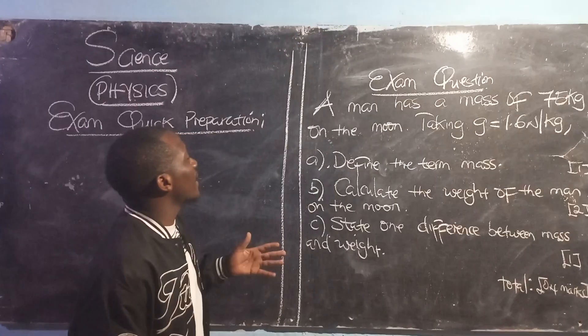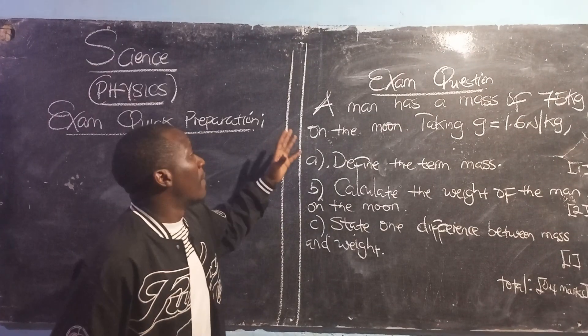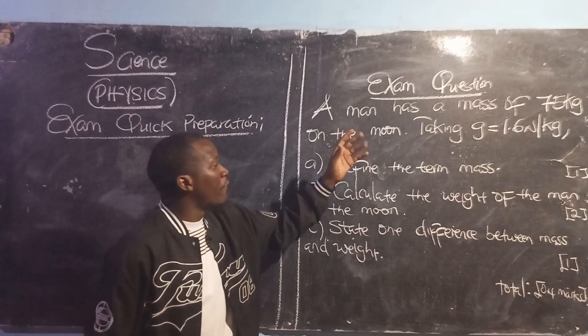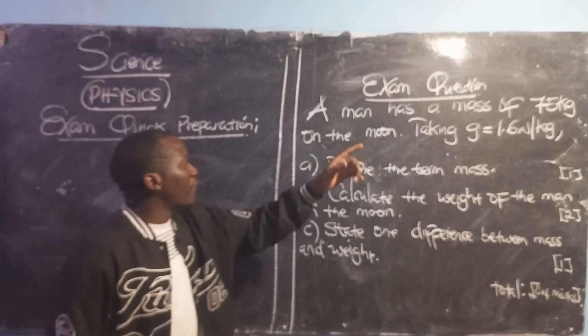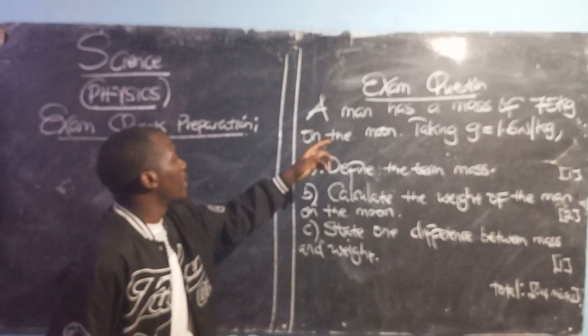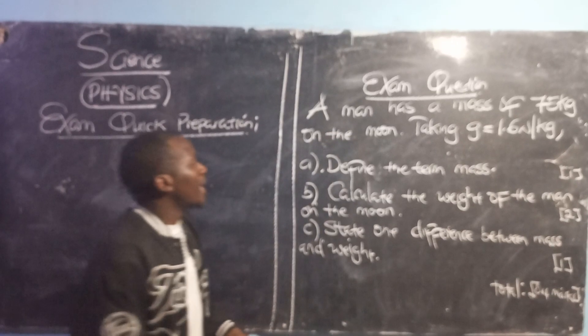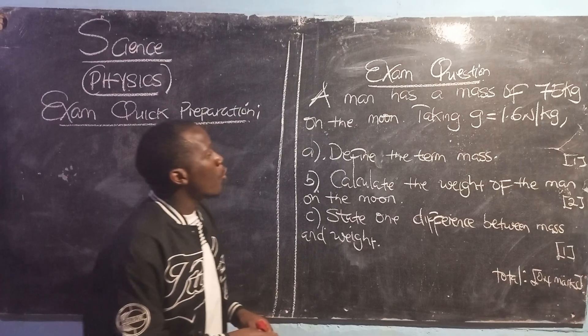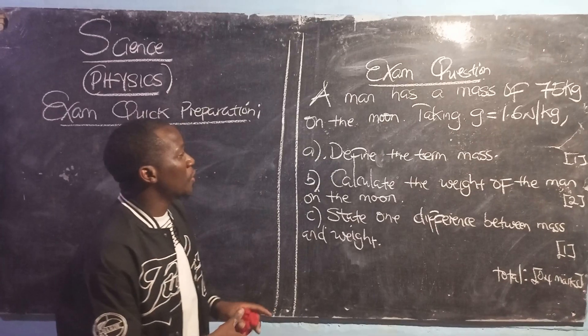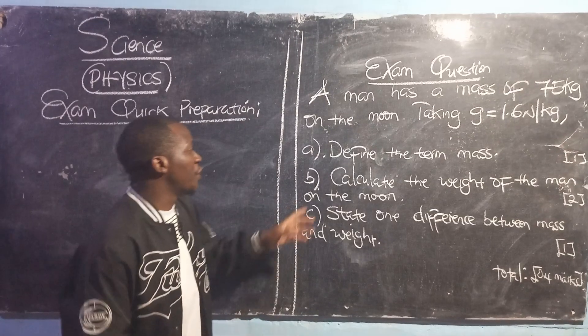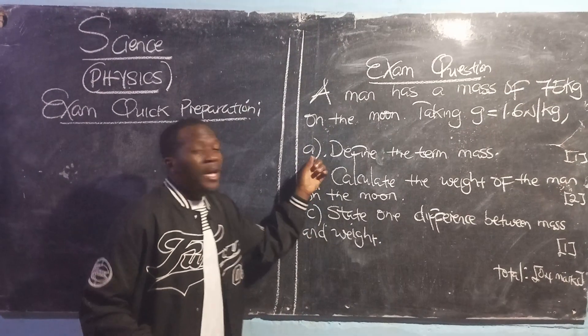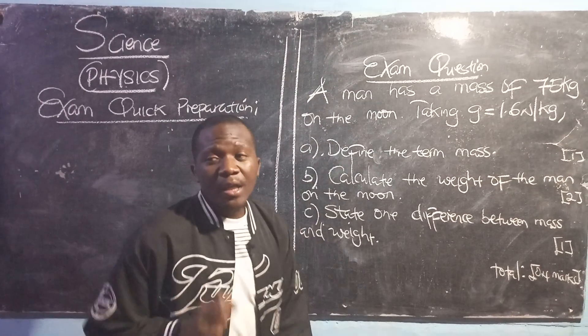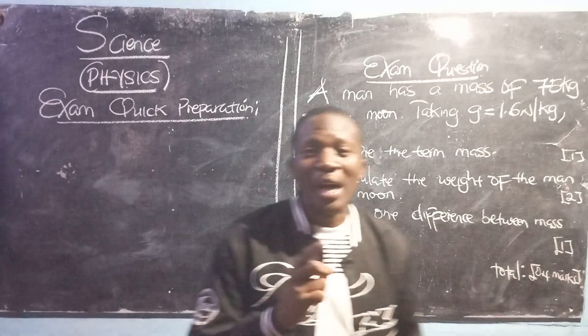The question says: a man has a mass of 75 kg on the moon, taking gravity to be 1.6 N per kg. Part A: define the term mass.